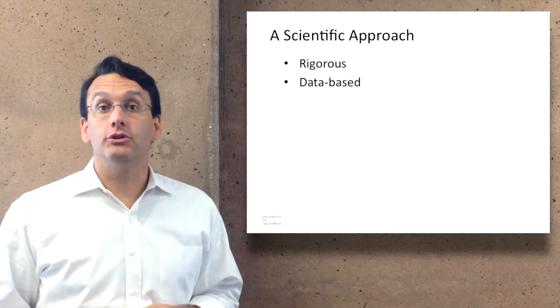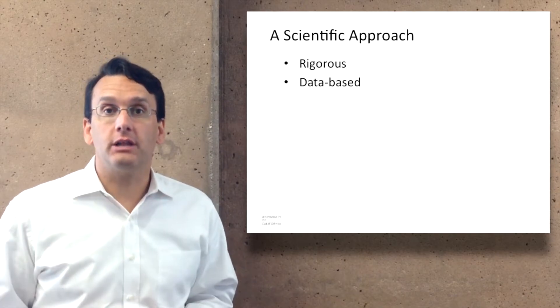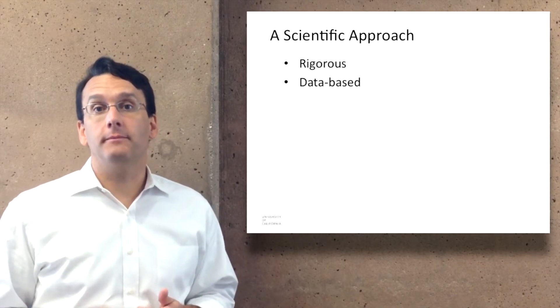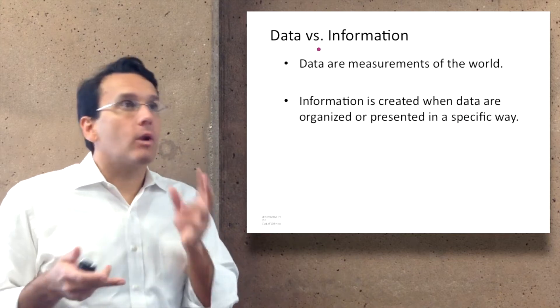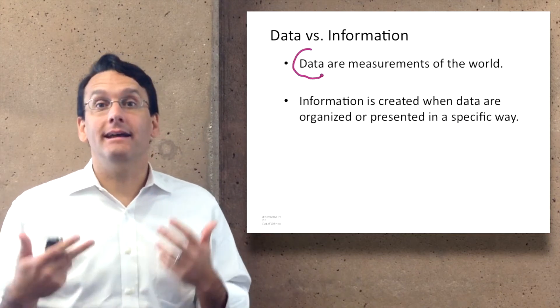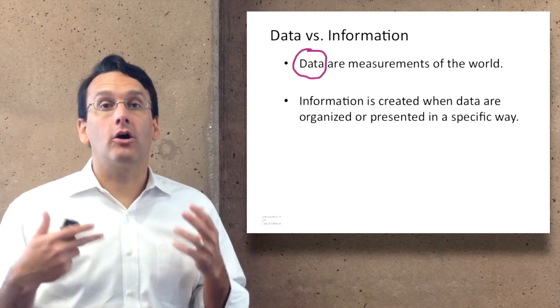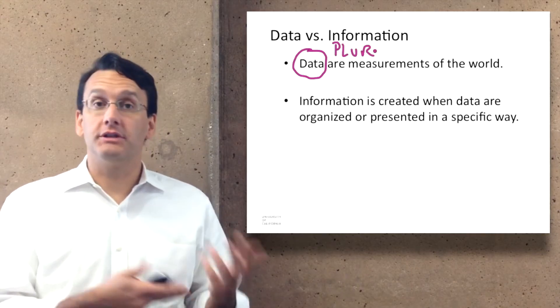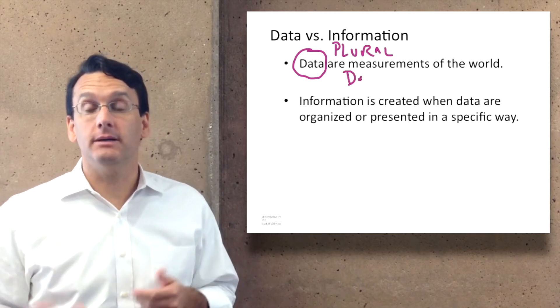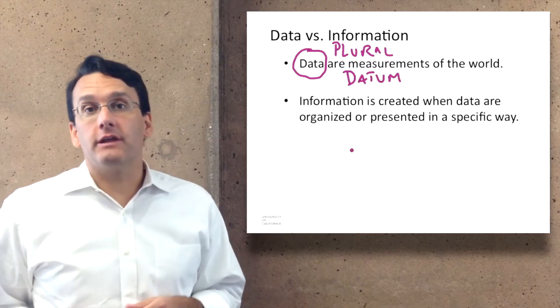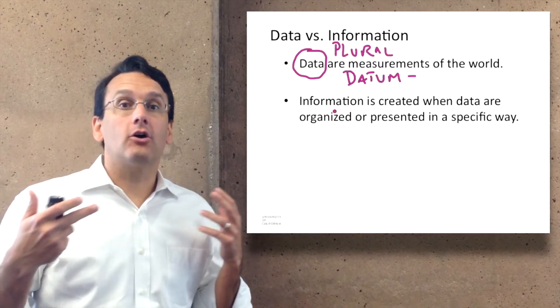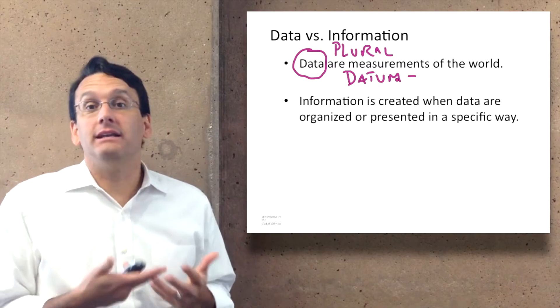When you take a scientific approach, it's trying to understand the world in a rigorous and data-based way. Here I want to make a distinction between data and information. Data are measurements of the world. Data is plural; the singular of data is a datum. Information, on the other hand, is created when data are organized or presented in a specific way.